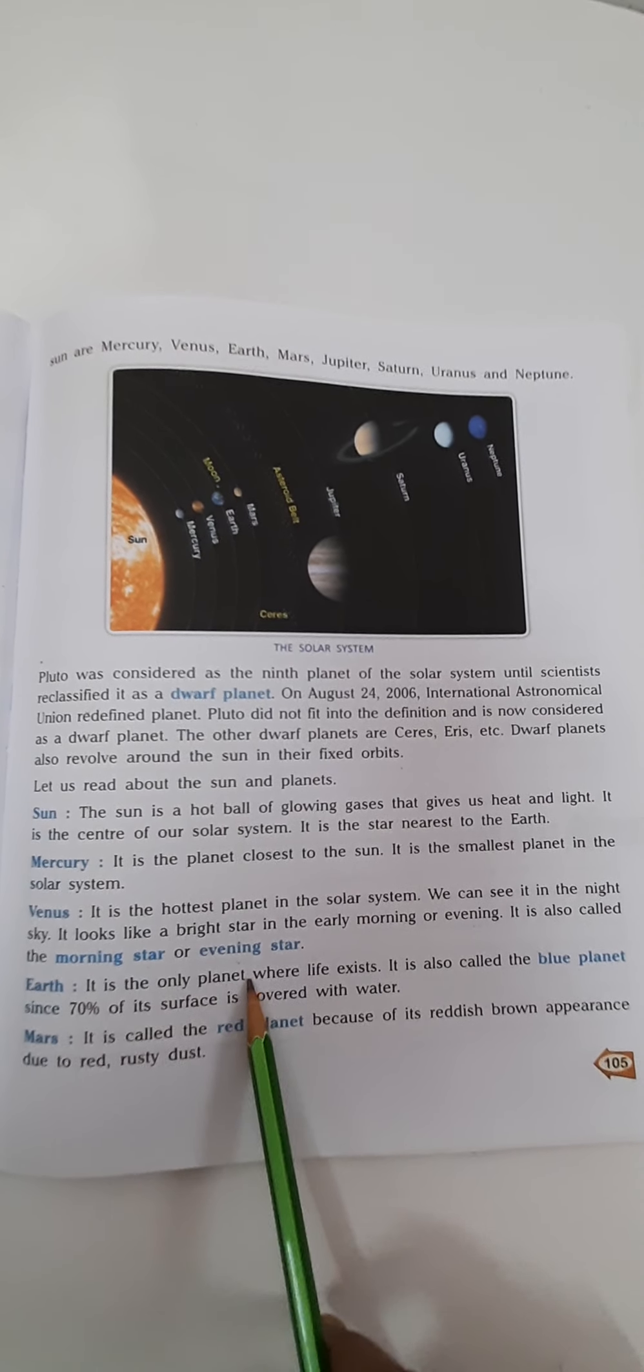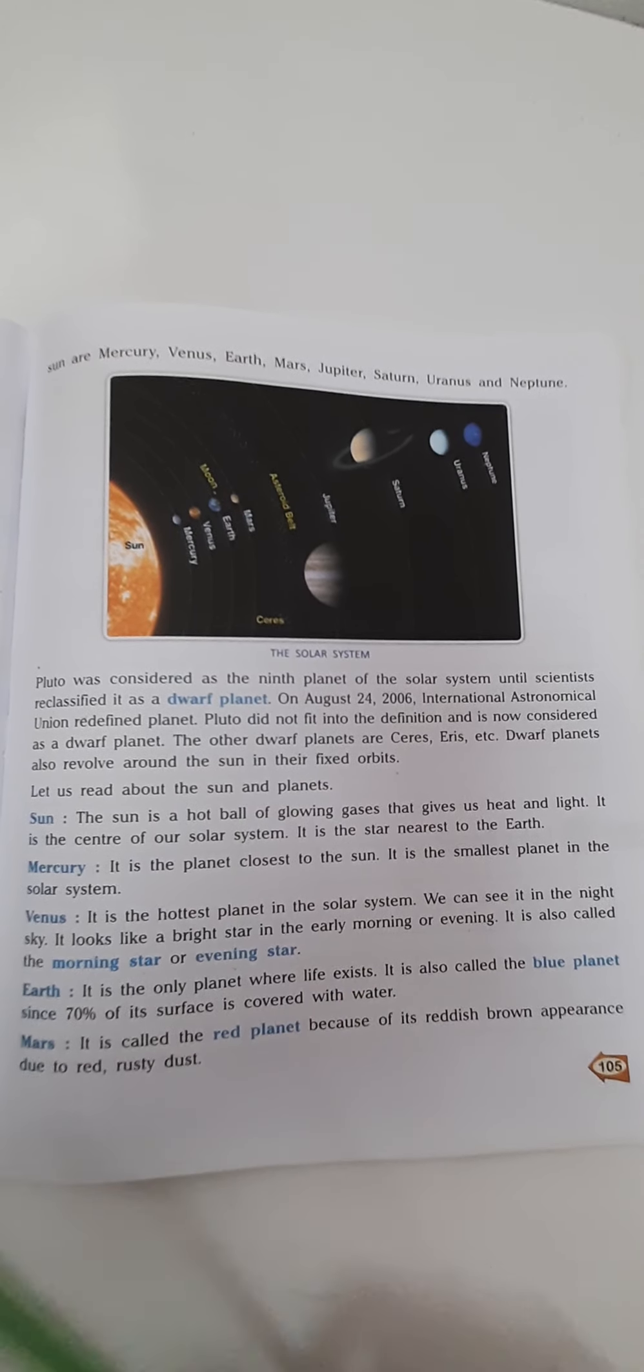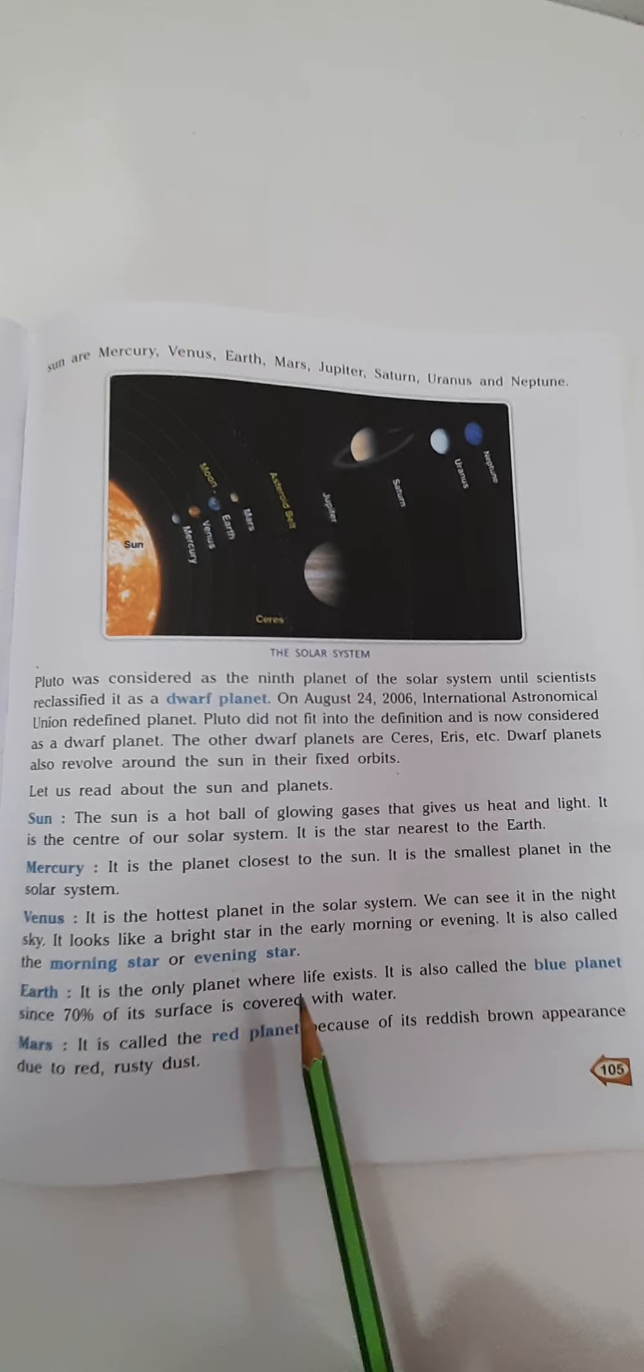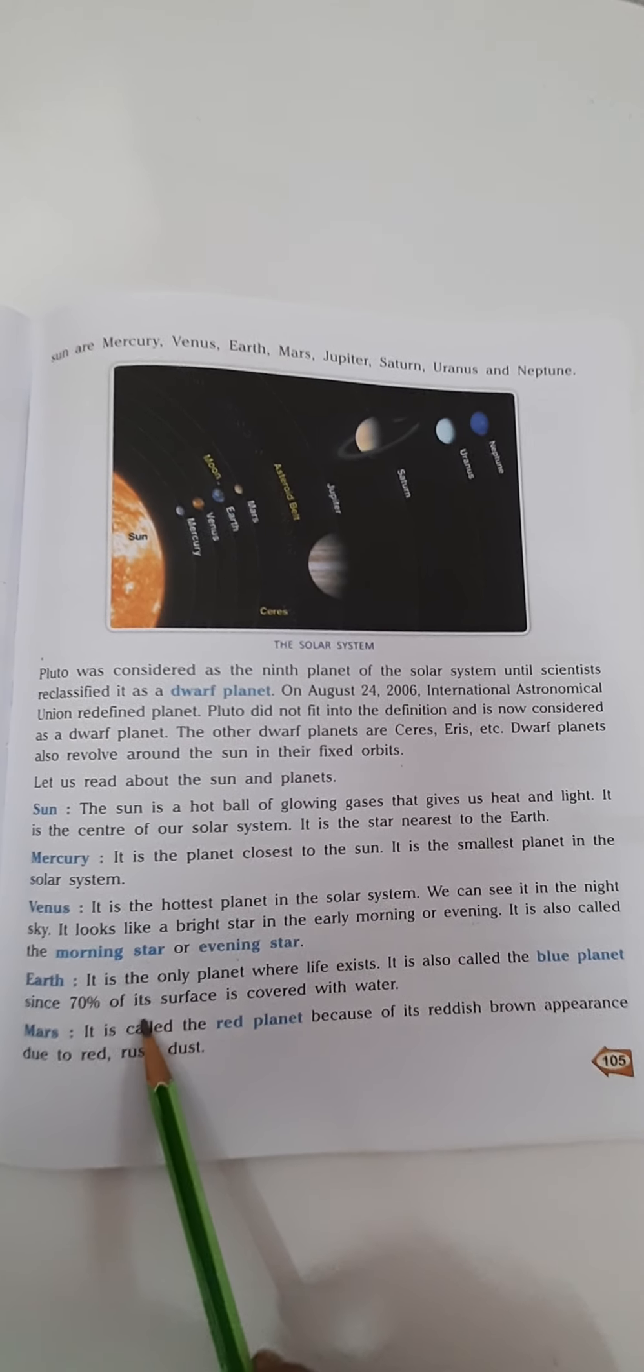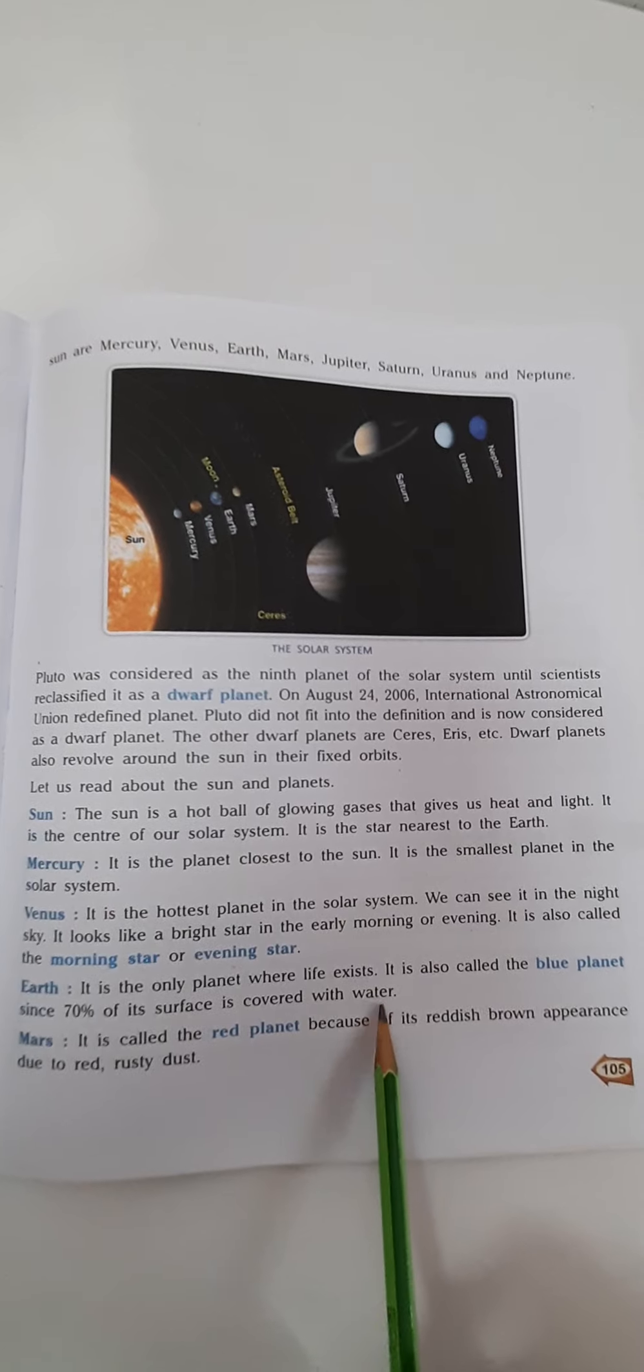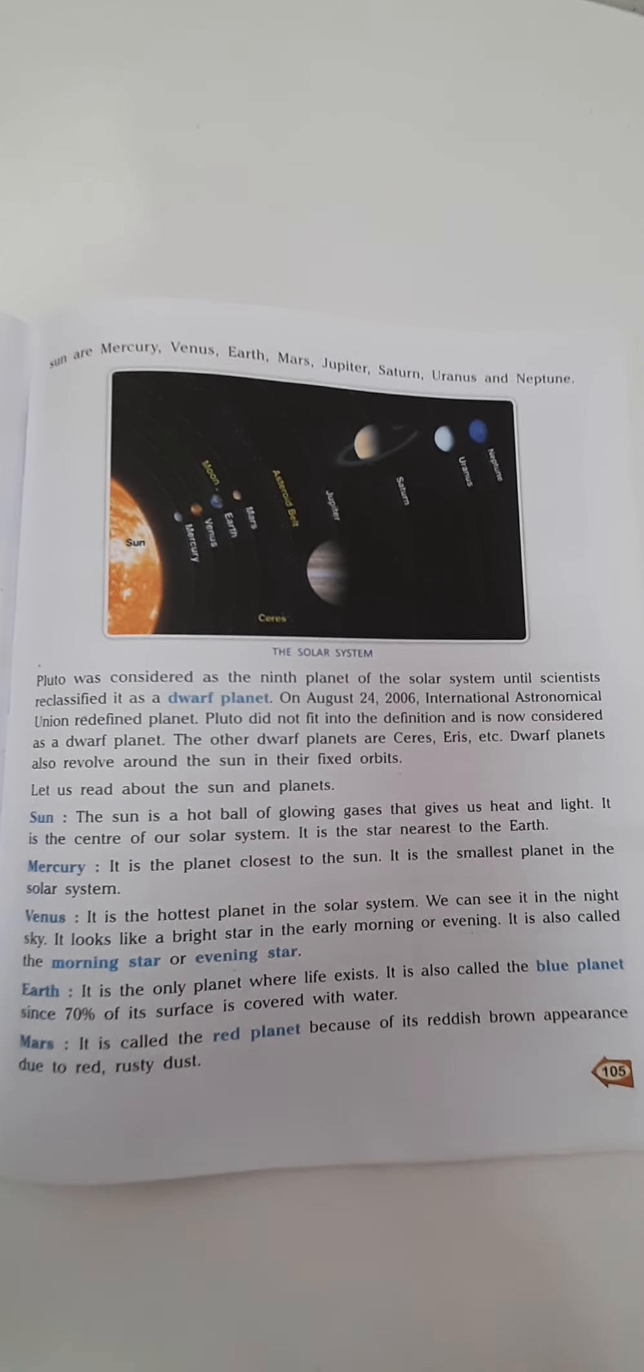Earth is the only planet where life exists. Till now we only know that earth is the only planet where life still exists. It is also called the blue planet and it is called so because 70% of its surface is covered with water. Water seems to be blue in color when it is seen from the sky or from space.